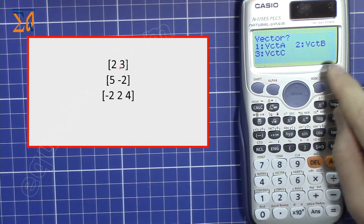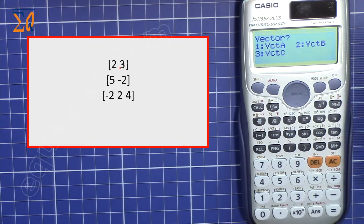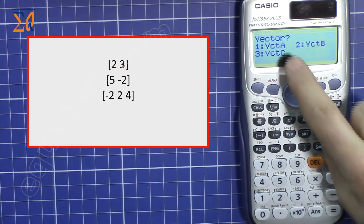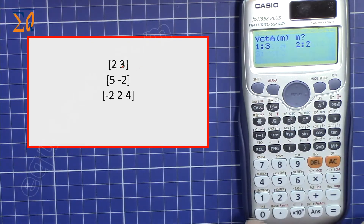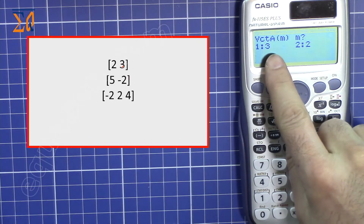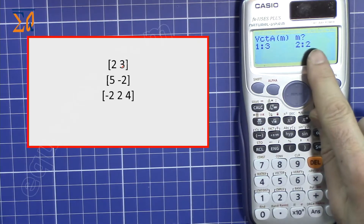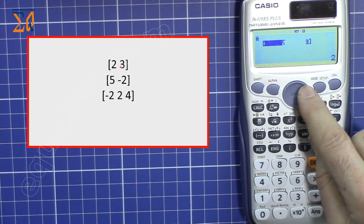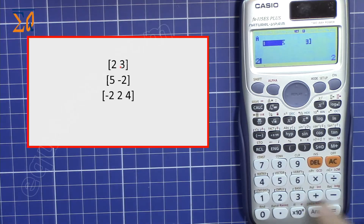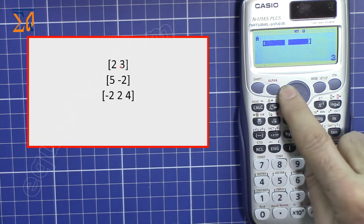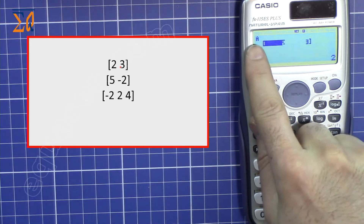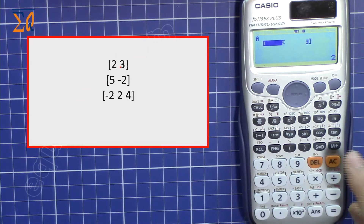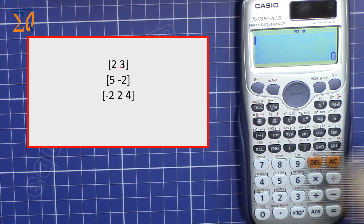The screen asks which vector slot to use — you can store up to three vectors. Press one to store into vector A. It then asks for the dimension; since this is two-dimensional, press two. Enter the values: two, equal, then three, equal.